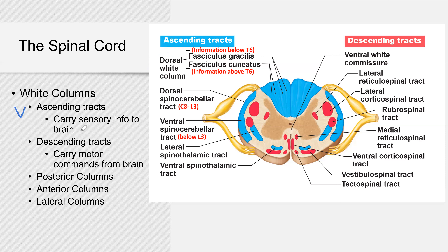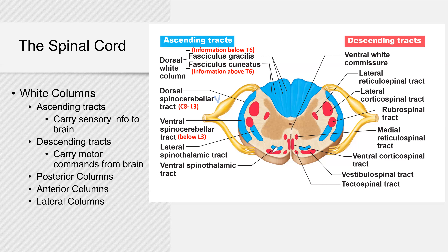Ascending tracts carry sensory information to the brain; descending tracts carry motor commands from the brain. We have posterior, anterior, and lateral columns. In the posterior we have the dorsal white column, the spinocerebellar tract, and the spinothalamic tract.